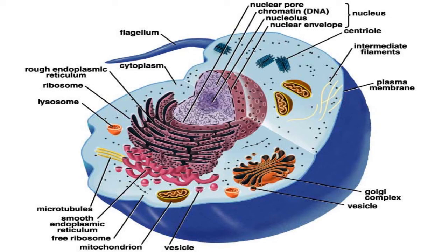Microfilaments are solid rods made of globular proteins called actin. These filaments are primarily structural in function and are an important component of the cytoskeleton. The endoplasmic reticulum is a network of sacs that manufactures, processes, and transports chemical compounds for use inside and outside of the cell.